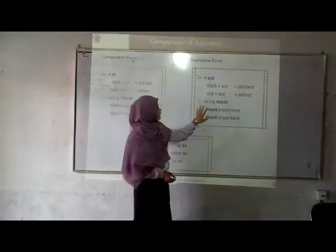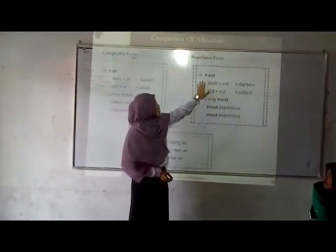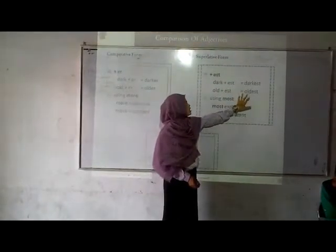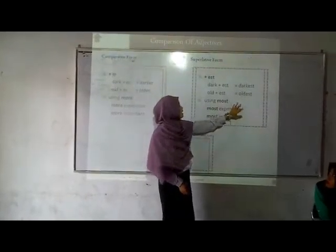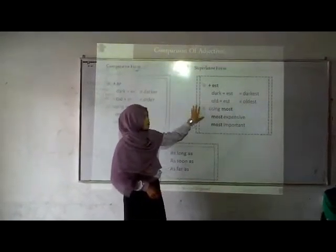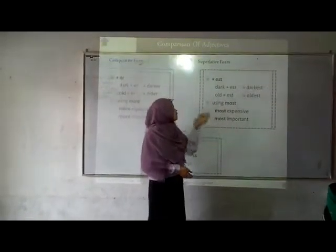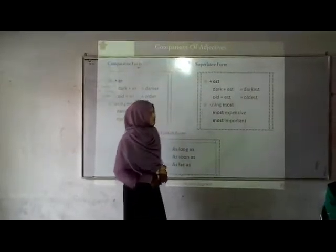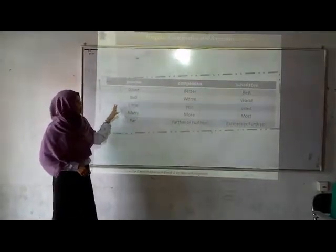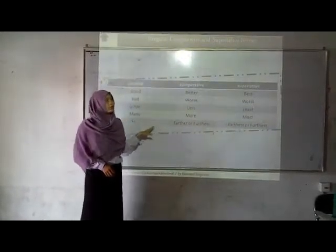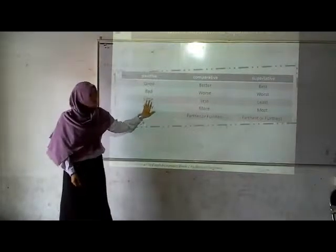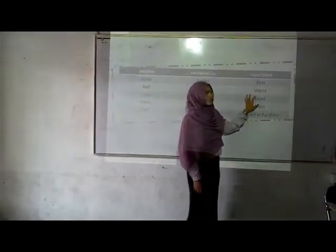The third is the superlative form. There are two ways to form the superlative. First, we add -est to the base word — for example, dark becomes darkest, old becomes oldest. Second, we use most — for example, most expensive and most important. We use the superlative form to show that a thing is the most among others. Some adjectives use irregular comparison forms — for example, good becomes better in the comparative and best in the superlative. Bad becomes worse in the comparative and worst in the superlative.